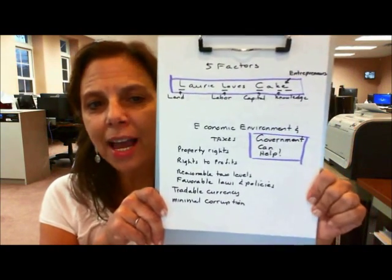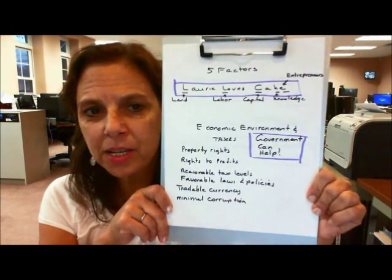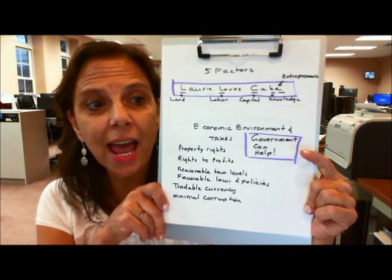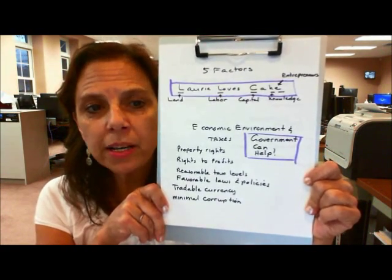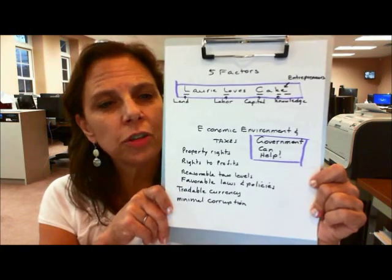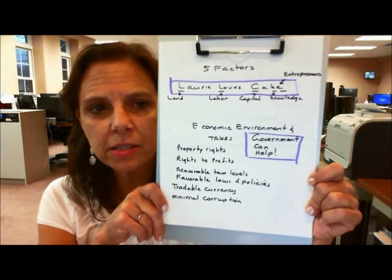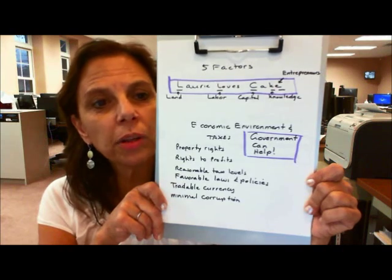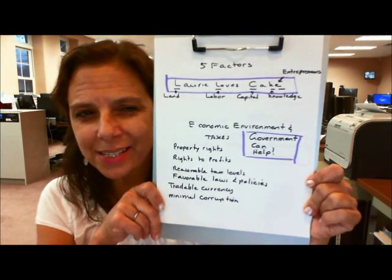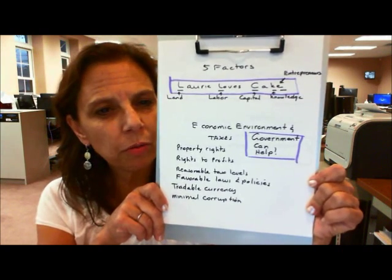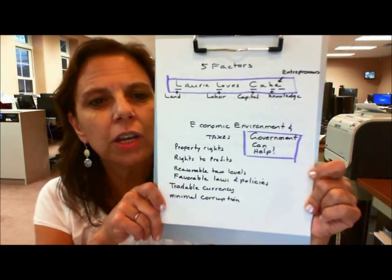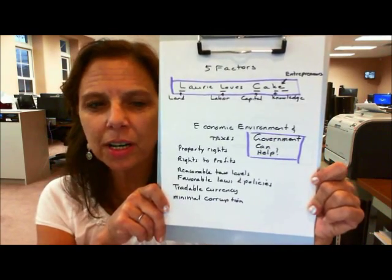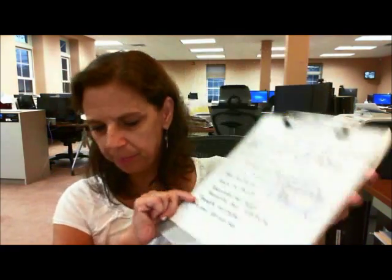We also need to talk about the economic environment and taxes. In this particular case, government can help. So: property rights, making sure that people have the rights to profits, making sure there are reasonable tax levels, favorable laws and policies in place, and good courts to enforce those. You need a tradable currency and minimal corruption, if at all possible.